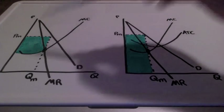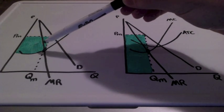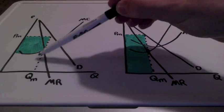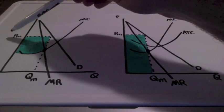Well first, with producer surplus, we find our profit maximizing quantity, where marginal revenue equals marginal cost, and we bring this all the way back up to our demand curve and over to our price.